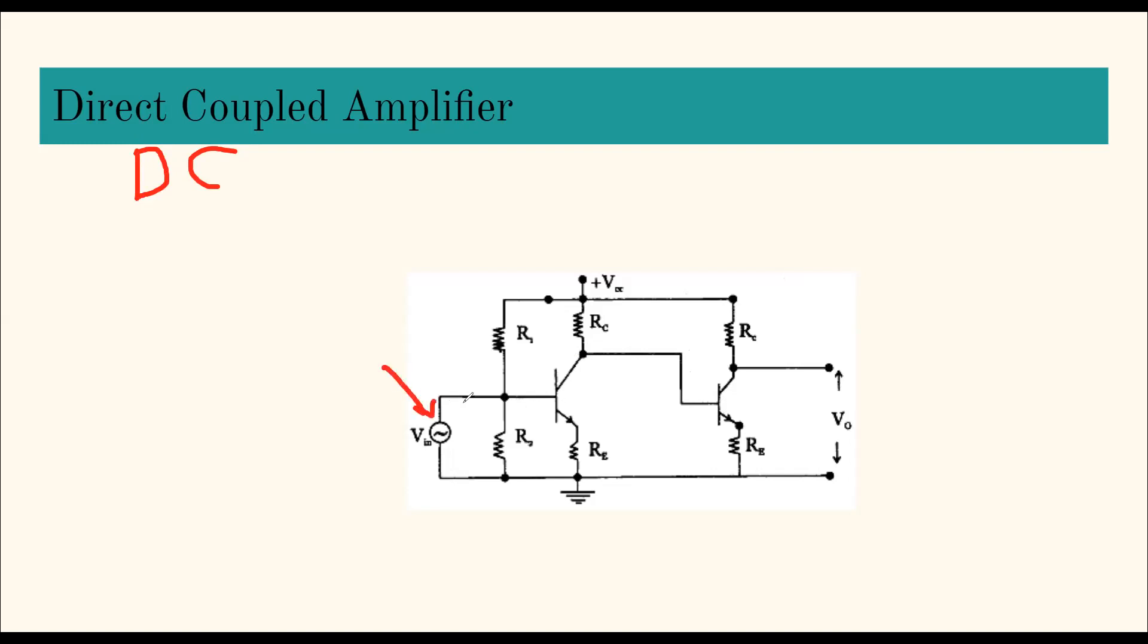Let us see the construction. This is the input to the first stage. Voltage divider bias R1, R2, this is the transistor. Output is taken at the collector. Output of the first stage is connected to the input of the second stage, and then output is again taken at the collector and we get the output voltage. If you have noticed, there is a very peculiar thing: not even a single capacitor is used in this particular design.